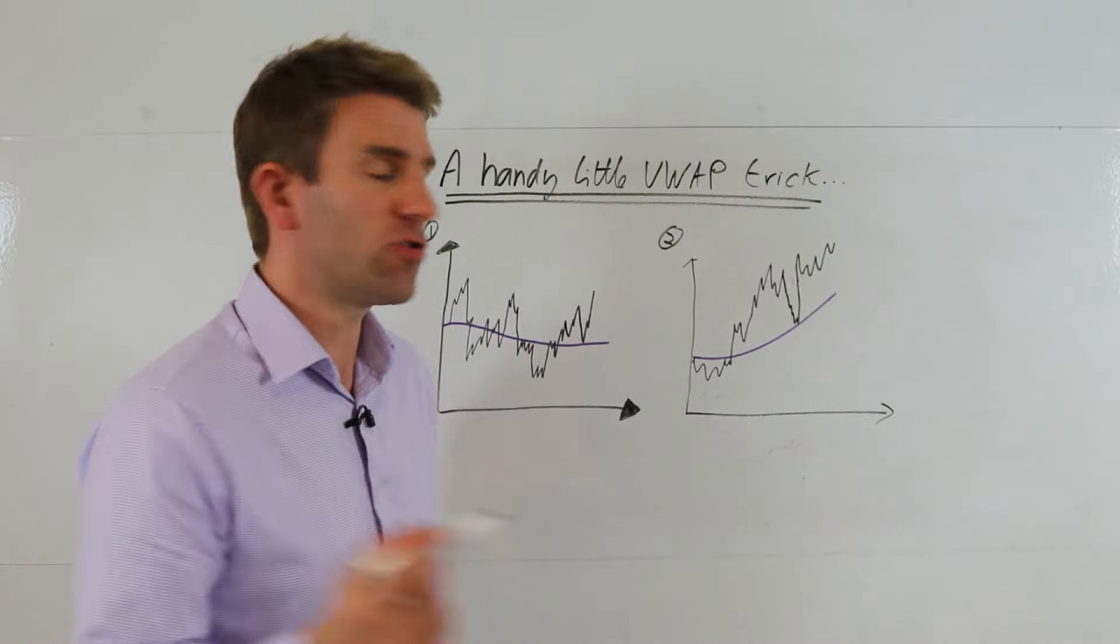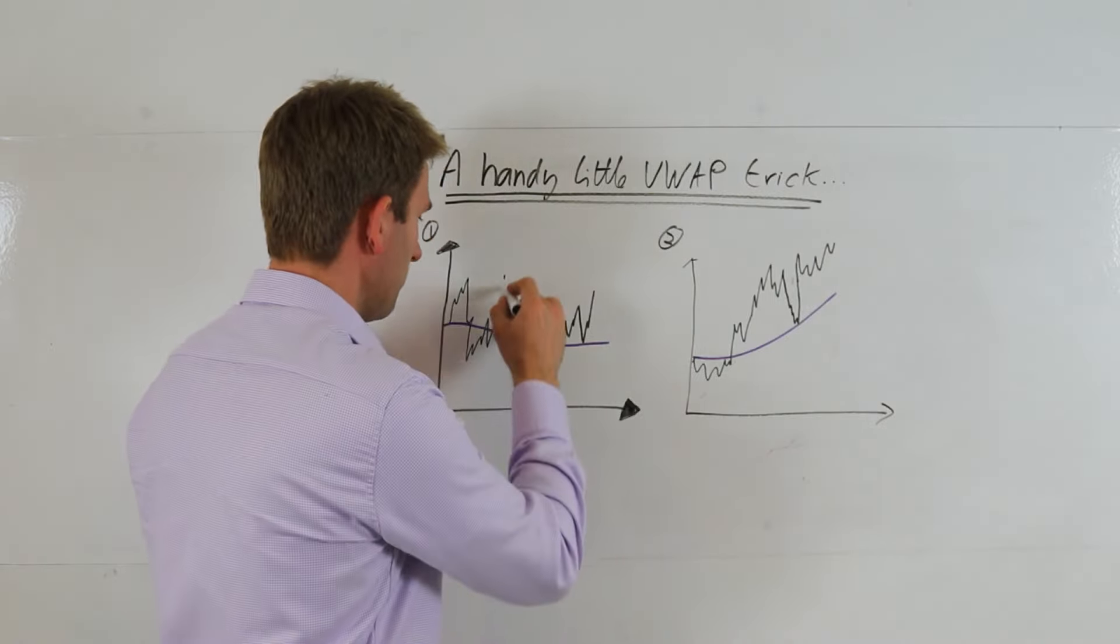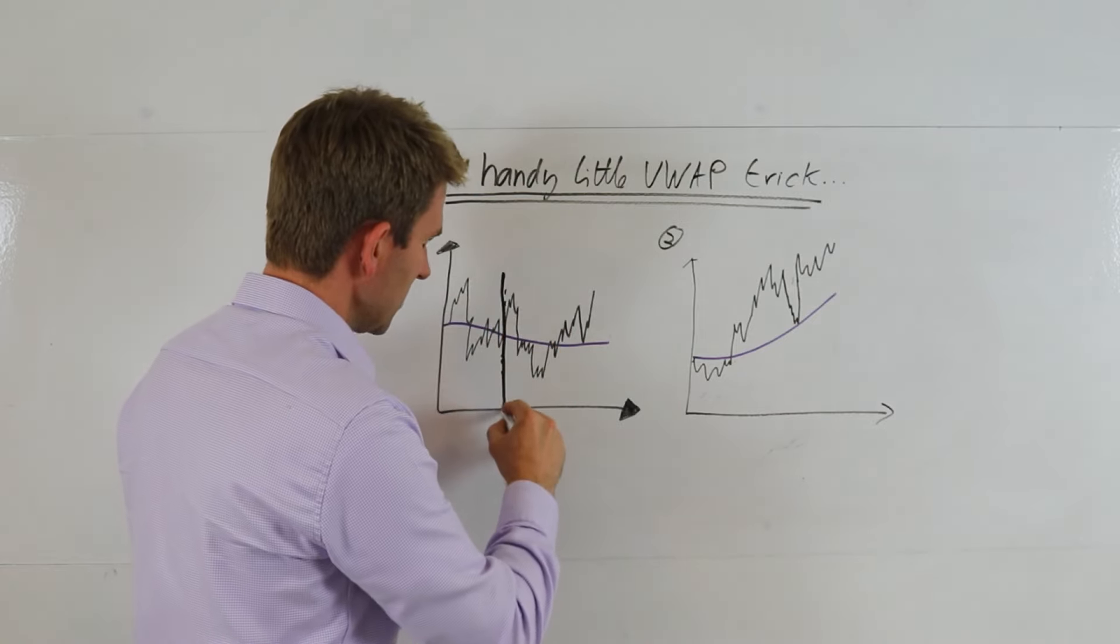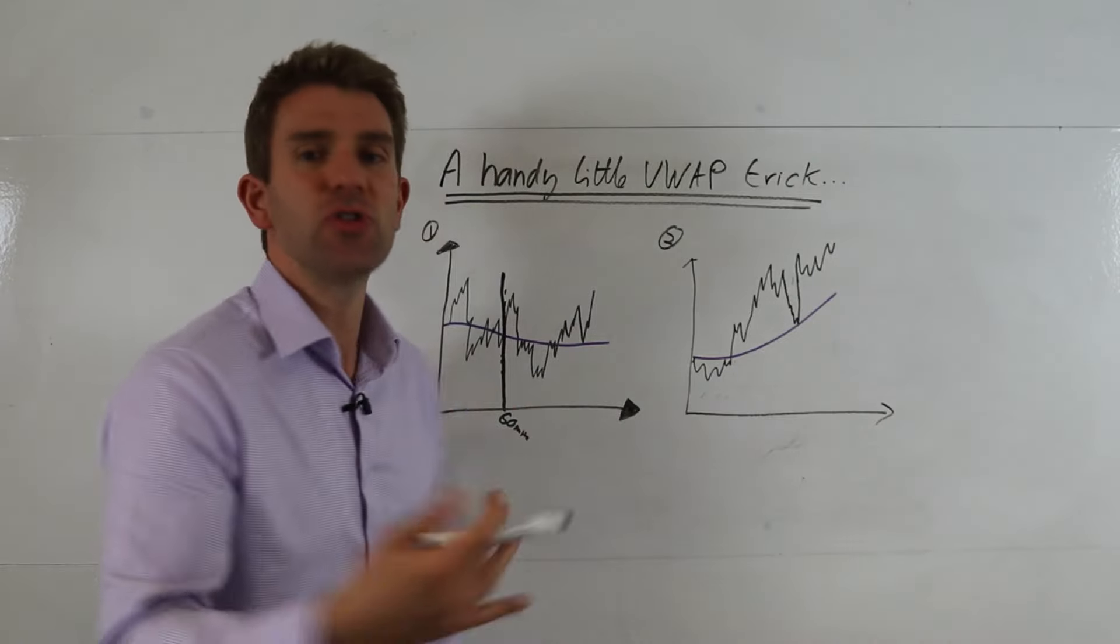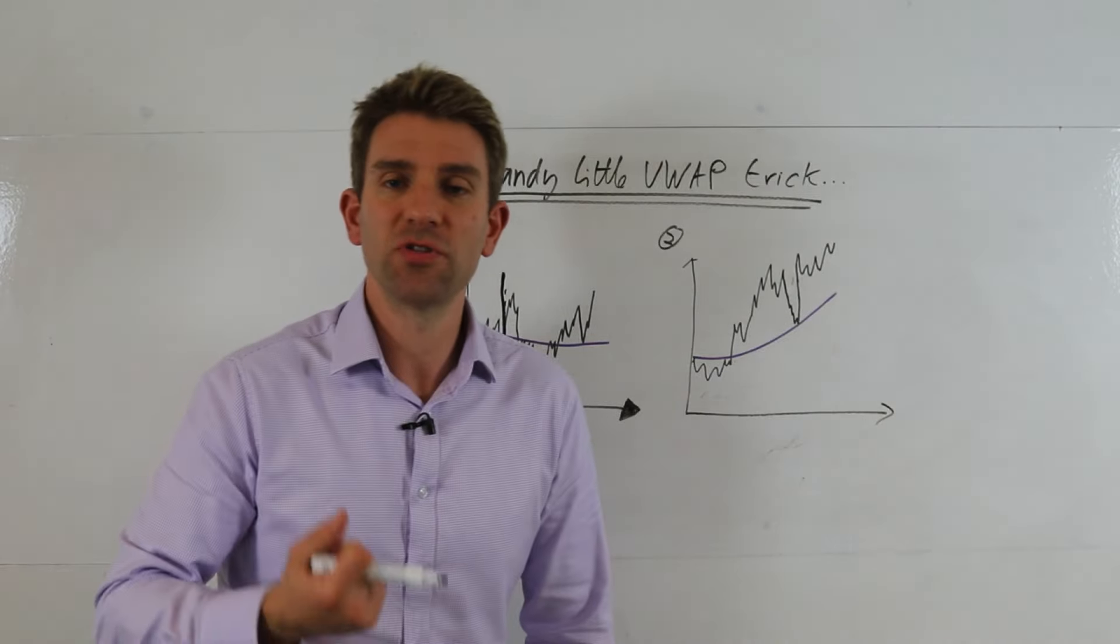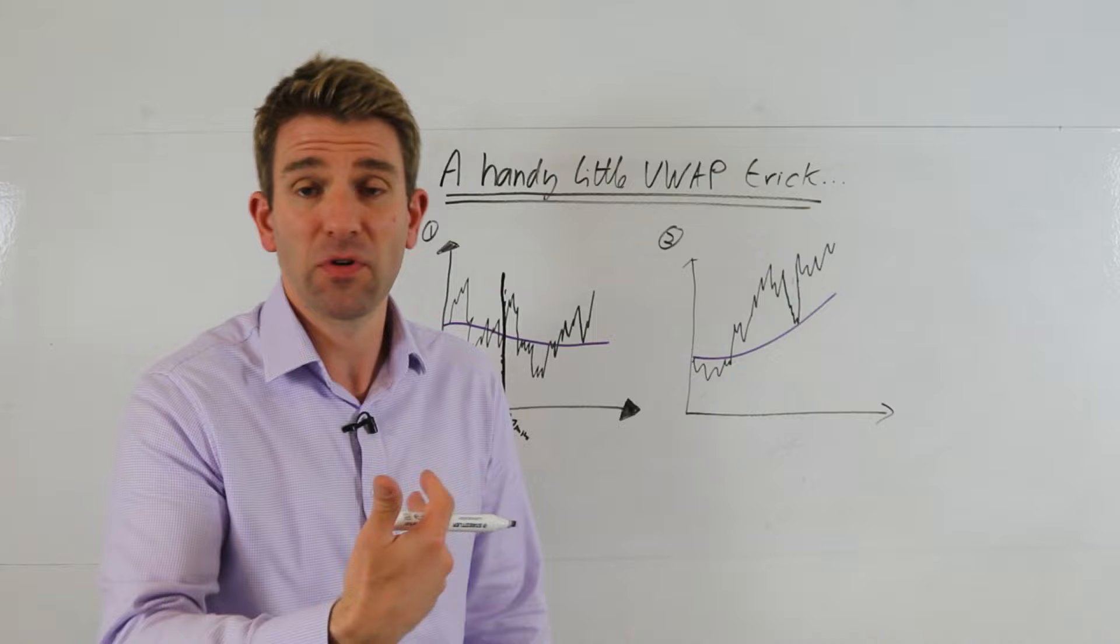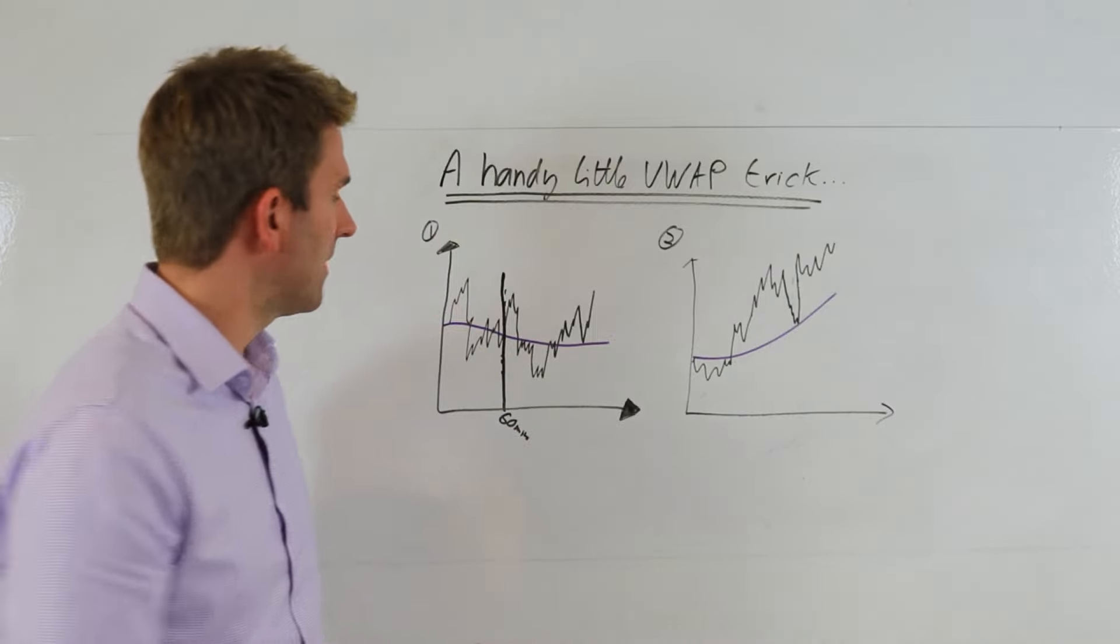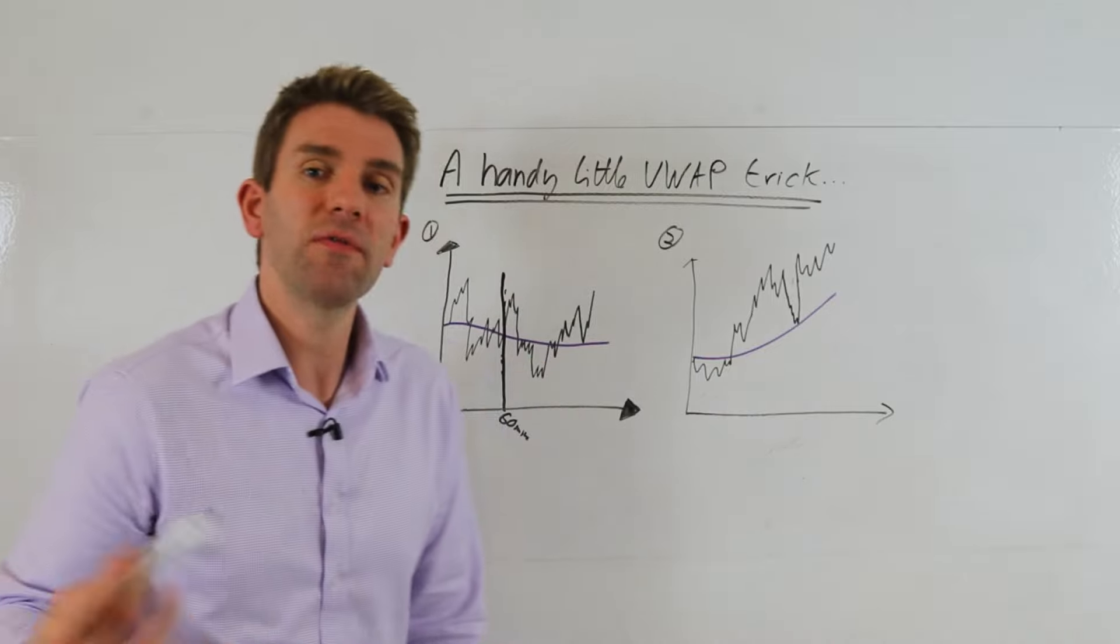Your filter would be: look at the first hour of trade. For example, here's our first hour, 60 minutes of trade. Adjust it to suit current market conditions—might be 30, 45 minutes, might be an hour and a half. Play around with it and count the number of times